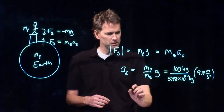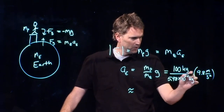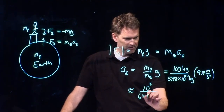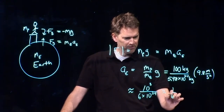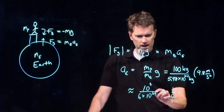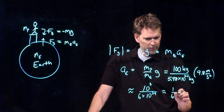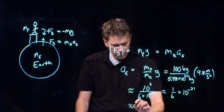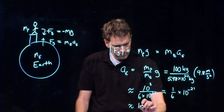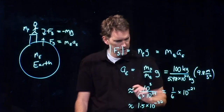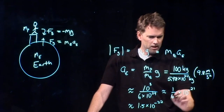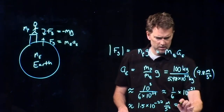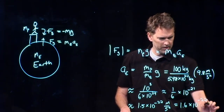Pull out your calculators and run through this calculation. Approximating: 100 is 10 to the 2, and 9.8 is close to 10, so the numerator is about 10 to the 3. The denominator is 6 times 10 to the 24, giving about 1.5 times 10 to the minus 22 meters per second squared. Running it through the calculator gives 1.6 times 10 to the minus 22 meters per second squared. Our guess was pretty close.